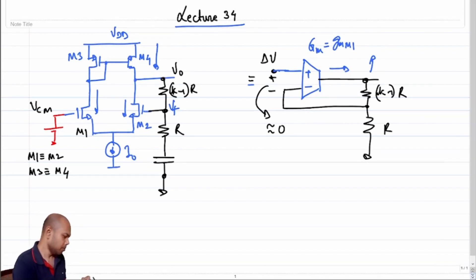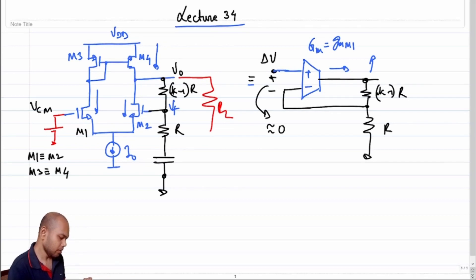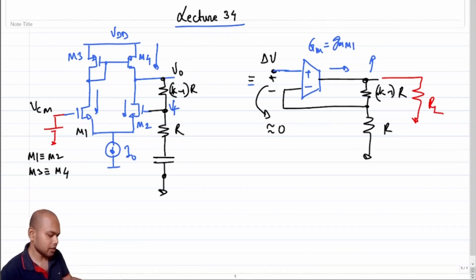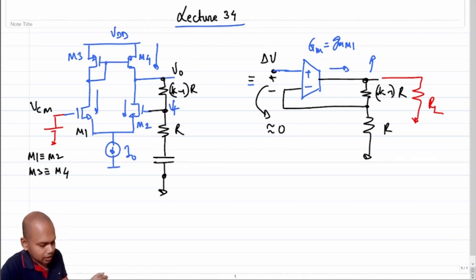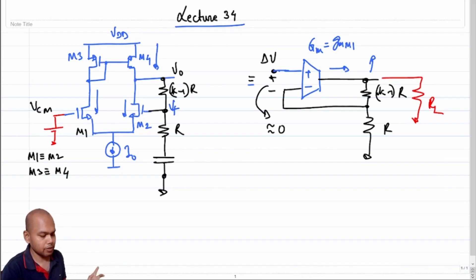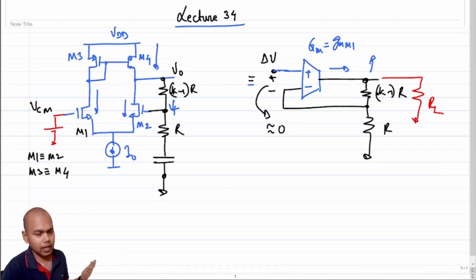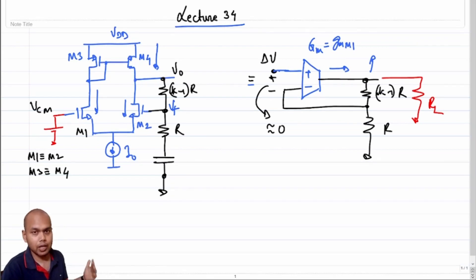Now, what happens if we put a resistance RL here? This resistance RL has an effect of lowering the loop gain. In the absence of RL, the loop gain was gm times kr. In the presence of RL, the loop gain becomes gm times (kr parallel RL). If RL is much smaller than kr, the loop gain becomes gm times RL. If the loop gain reduces, then all the good things of negative feedback vanish.